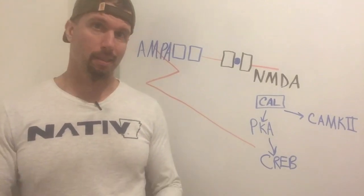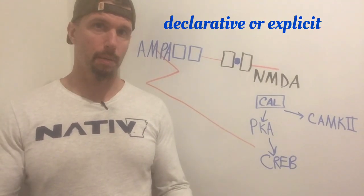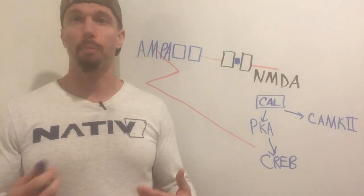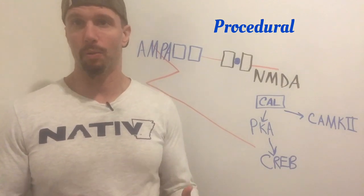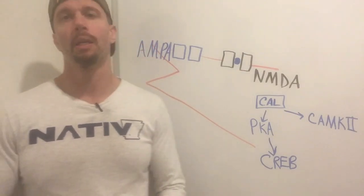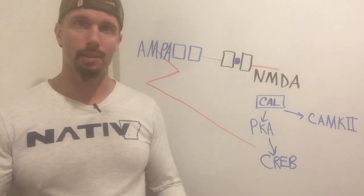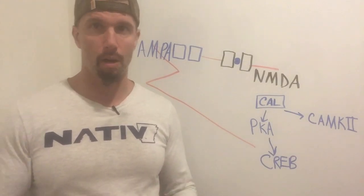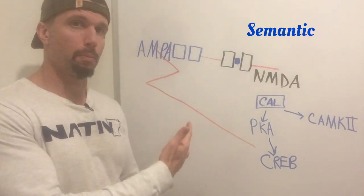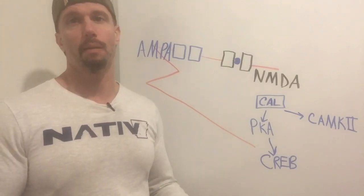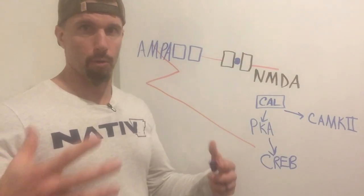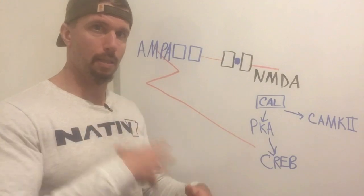There are two different types of memories: declarative memories, also called explicit memories, and non-declarative or implicit memories. Non-declarative memories are procedural memories, like how to ride a bicycle, and involve brain regions like the basal ganglia, motor cortex, and cerebellum. Declarative memories take place deep in the temporal lobe in the hippocampus, and are subdivided into semantic memories, like remembering physiology facts, and episodic memories, like remembering having lunch with a friend last week.